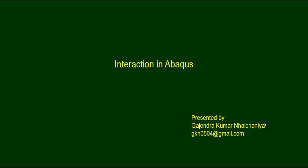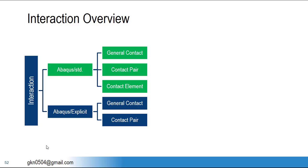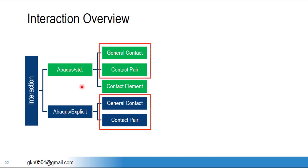Welcome to the next video tutorial of the Abacus playlist. In this tutorial I will talk about interaction in Abacus Standard as well as Abacus Explicit. We have three types of common contact algorithms available: general contact, contact pair, and contact element. The contact element algorithm is not available in Abacus Explicit but is available with Abacus Standard.